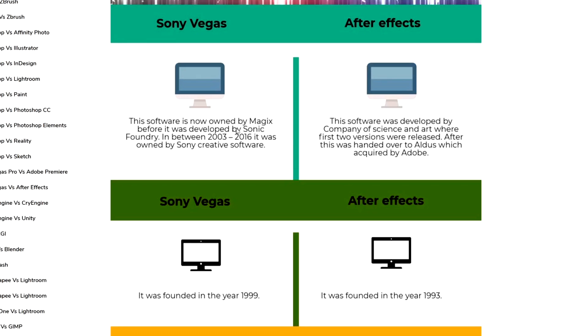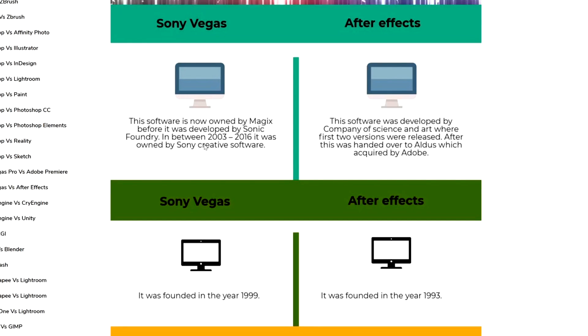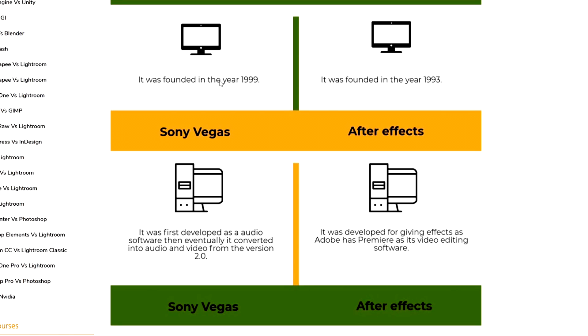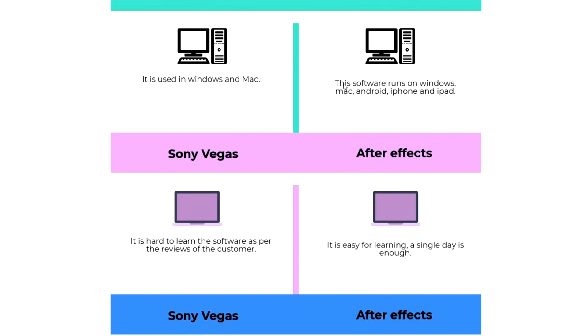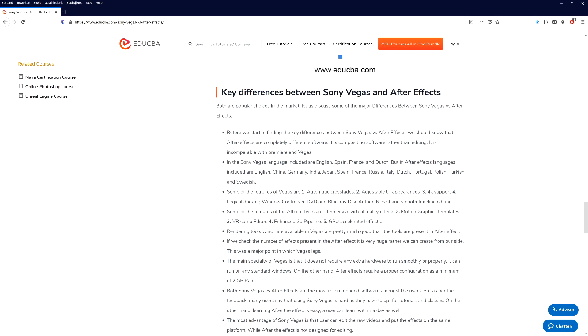For Vegas Pro, it's now owned by Magix — it was originally founded by Sony, which is why it was called Sony Vegas. Magix took it over around 2016, before that it was developed by Sonic Foundry. After Effects was developed by Company of Science and Art, then handed to Aldus, which was acquired by Adobe. Vegas Pro's first versions were released in 1999, while After Effects was founded in 1993. Today both run on Windows and Mac, and After Effects also runs on Android, iPhone, and iPad.